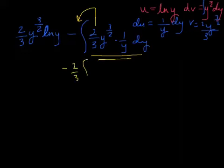Since this is all multiplication, I could take out the two-thirds. So that gives me minus two-thirds integral of. Now you have y to the three-halves times one over y. We'll combine those two.